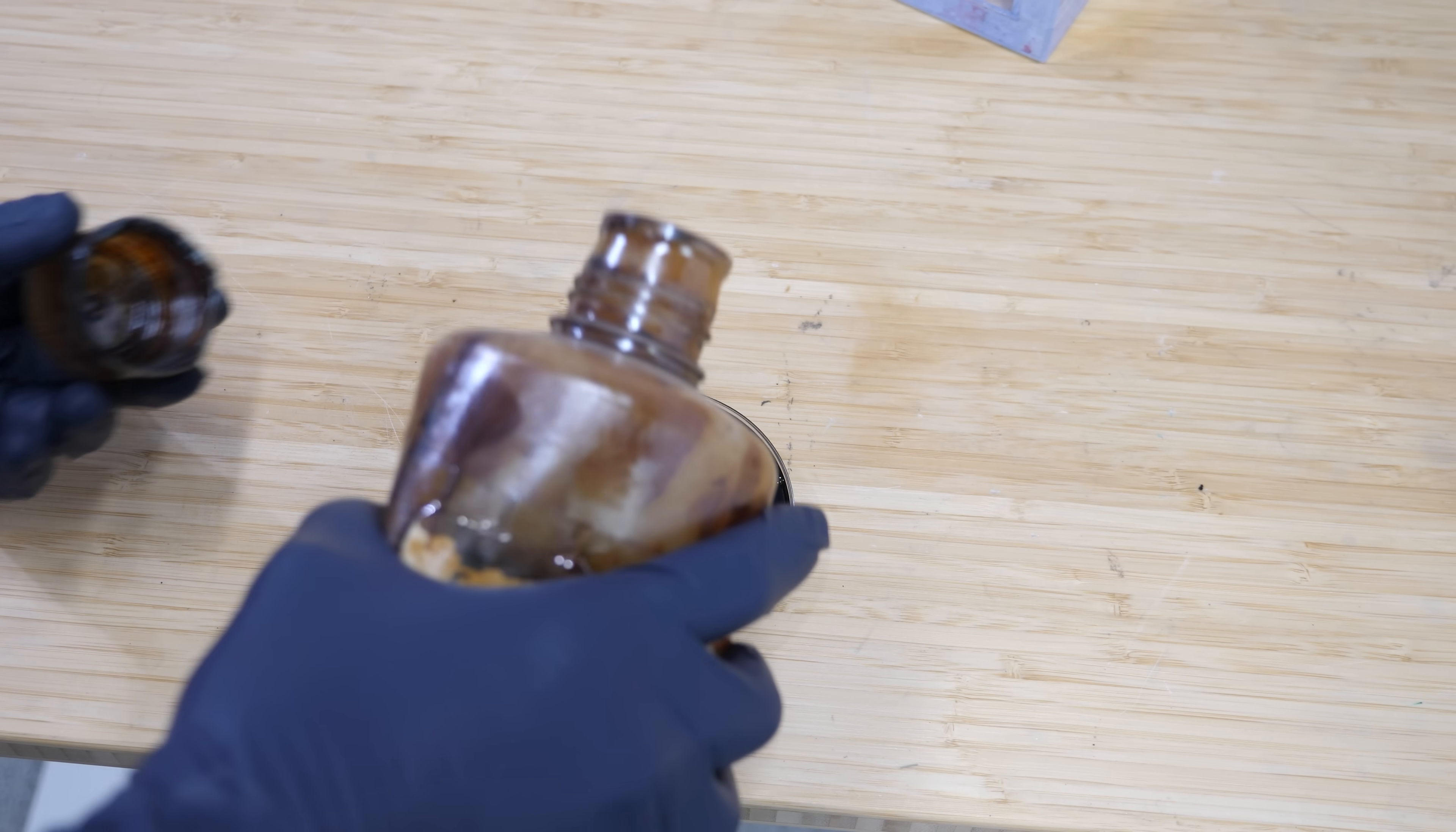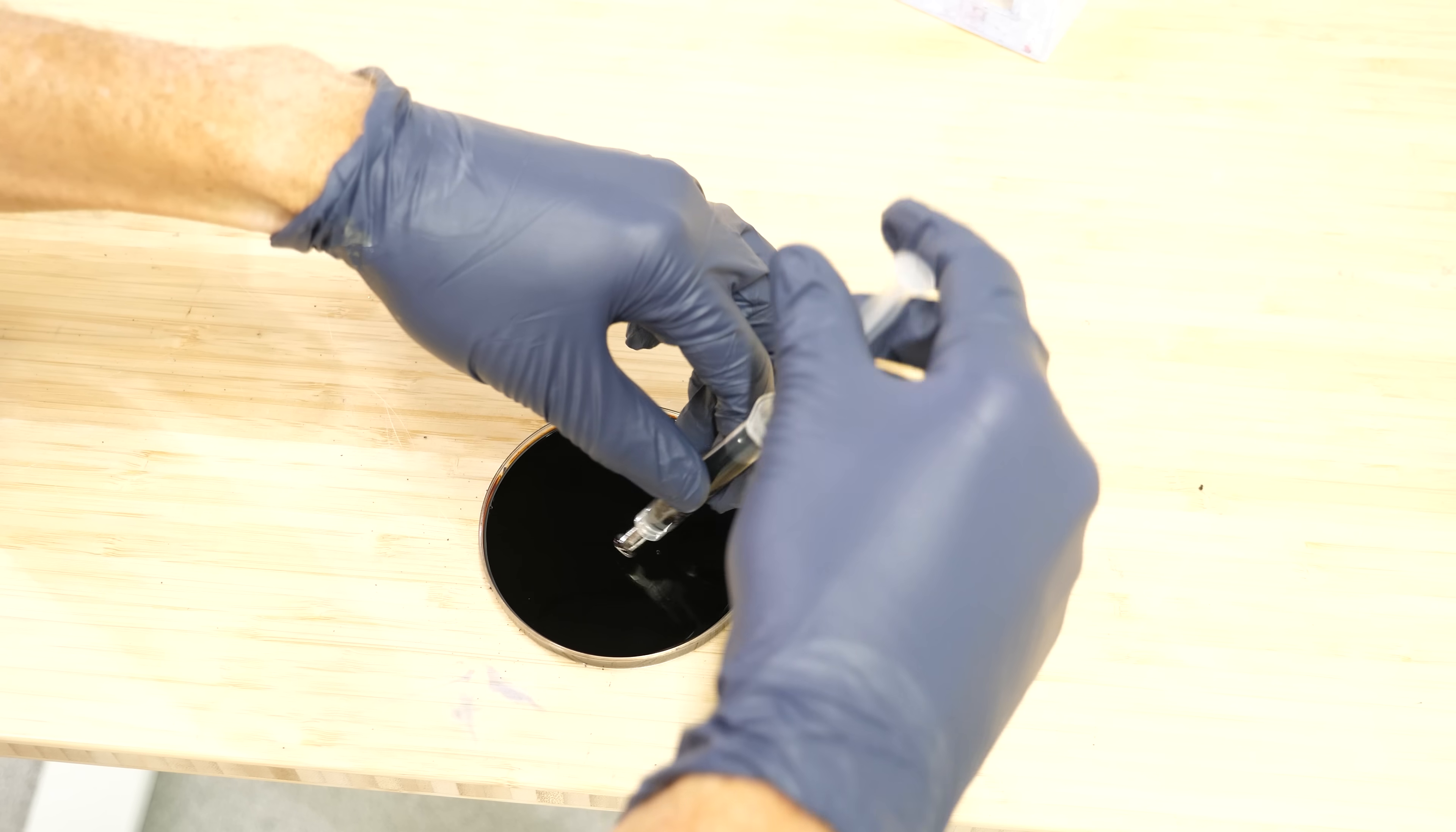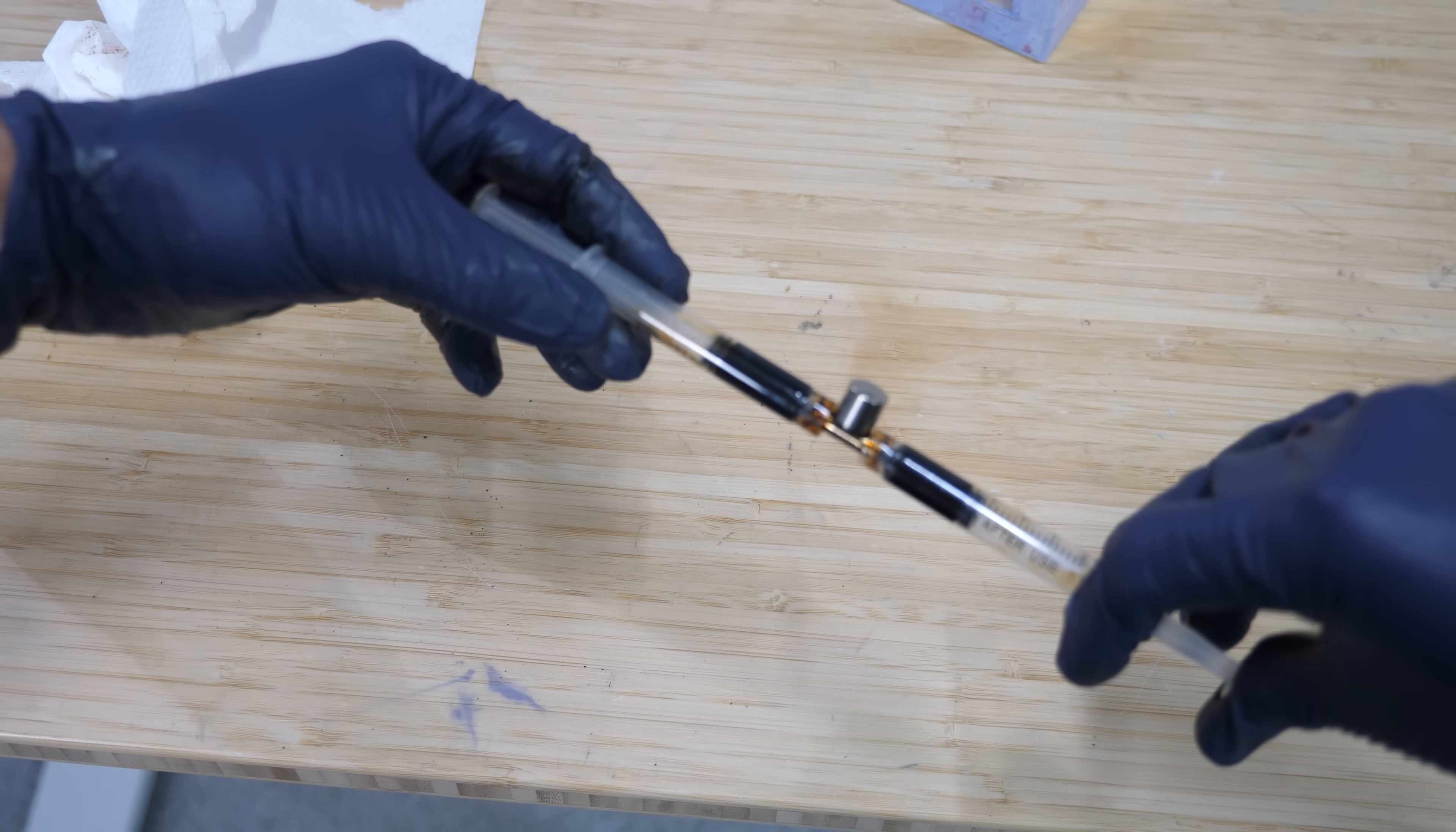But how is a magnet changing the viscosity of the fluid? First, you have to understand this fluid is not just normal magnetic fluid like ferrofluid. Ferrofluid doesn't significantly increase in viscosity when you put it in a magnetic field. For example, if I fill these same syringes with ferrofluid, you can see that I get about the same force whether or not the magnet is there.